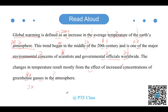那接下来我们再来慢速地读一遍，大家注意一下里面的发音细节。Global warming is defined as an increase in the average temperature of the earth's atmosphere. This change began in the middle of the 20th century, and is one of the major environmental concerns of scientists and governmental officials worldwide. The changes in temperature result mostly from the effect of increased concentrations of greenhouse gases in the atmosphere.